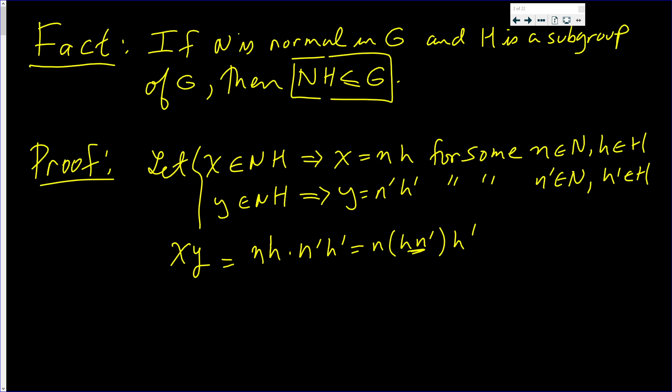But this is equal to n(hn')h'. But N is normal, and h is in G. So I can reverse these, and this is equal to n times n' times h times h'.